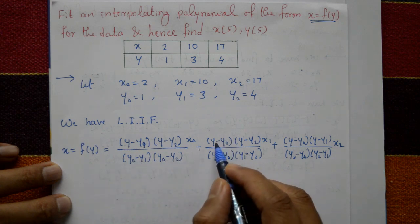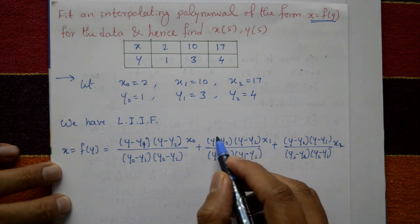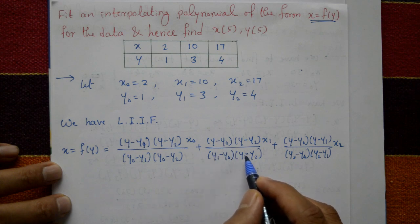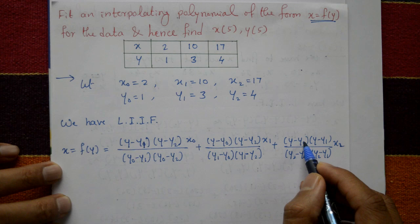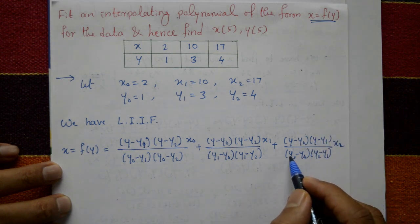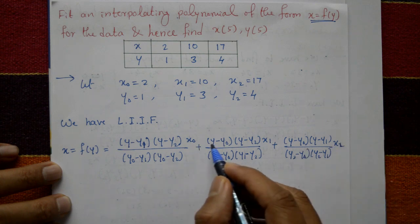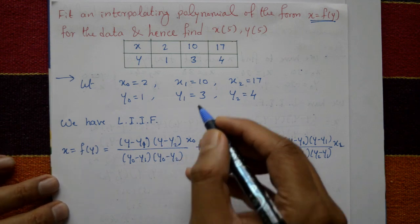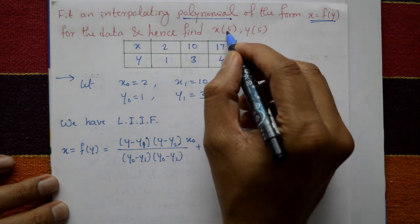Continuing the formula: plus [(y − y₀)(y − y₂) / (y₁ − y₀)(y₁ − y₂)] · x₁, excluding y₁ in the numerator and including y₁ in the denominator; plus [(y − y₀)(y − y₁) / (y₂ − y₀)(y₂ − y₁)] · x₂. First find the polynomial equation, then find x(5) and y(5).